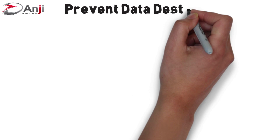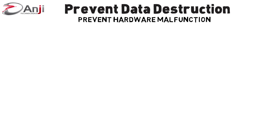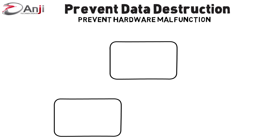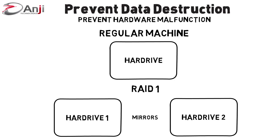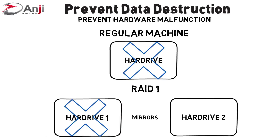One protocol to prevent data destruction is to prevent hardware malfunction through various mechanisms. For example, implement a RAID 1 hard drive mirroring protocol. A RAID 1 hard drive configuration mirrors data on a second hard drive. On a regular machine, if a hard drive is destroyed, the data is completely destroyed. On a machine configured with RAID 1, if hard drive 1 is destroyed, the data on the second hard drive will not be destroyed.